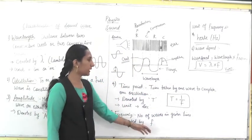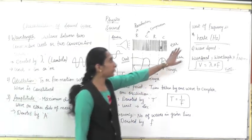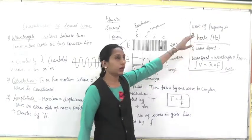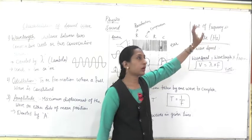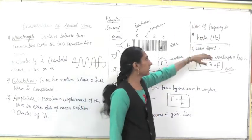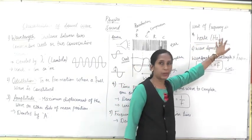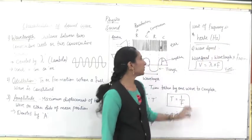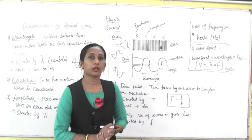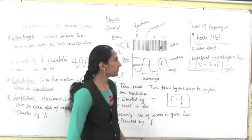Frequency is denoted by letter F, and the very important unit of frequency is hertz. It is named after the scientist Heinrich Hertz. His name was Heinrich Hertz and he gave this unit for frequency — hertz, written H-E-R-T-Z, denoted in short as capital H small z.